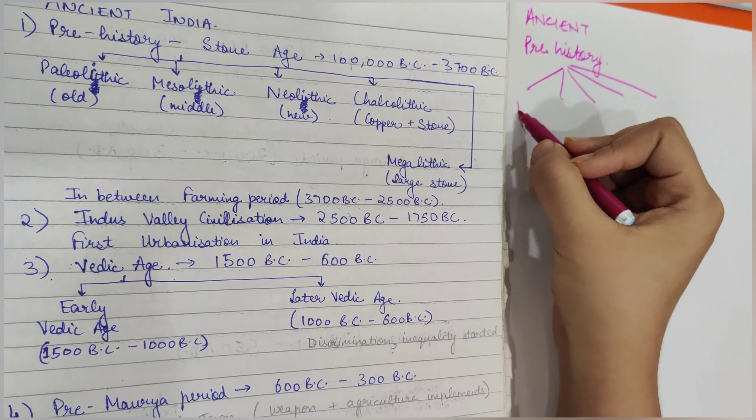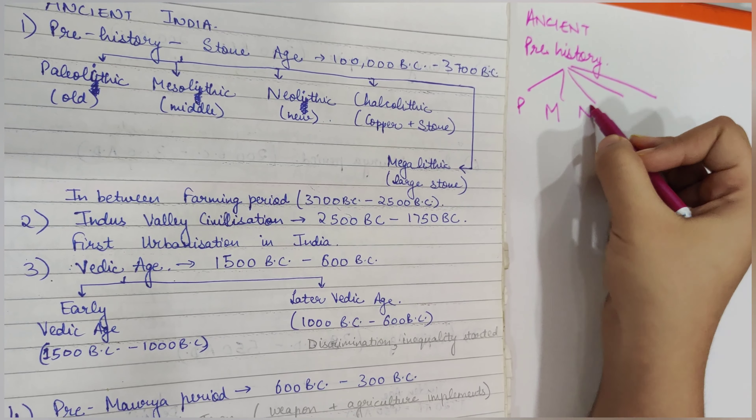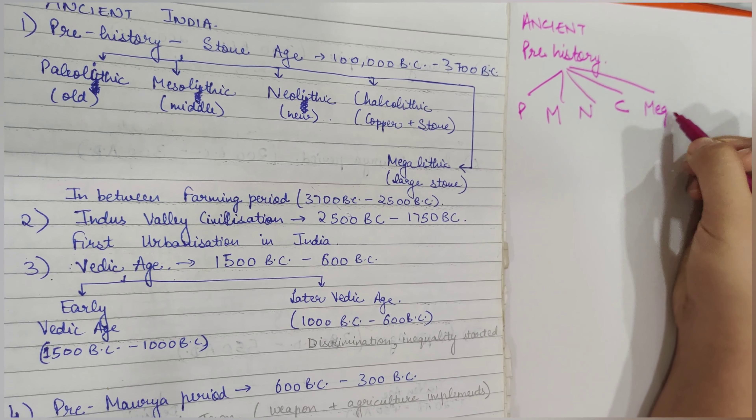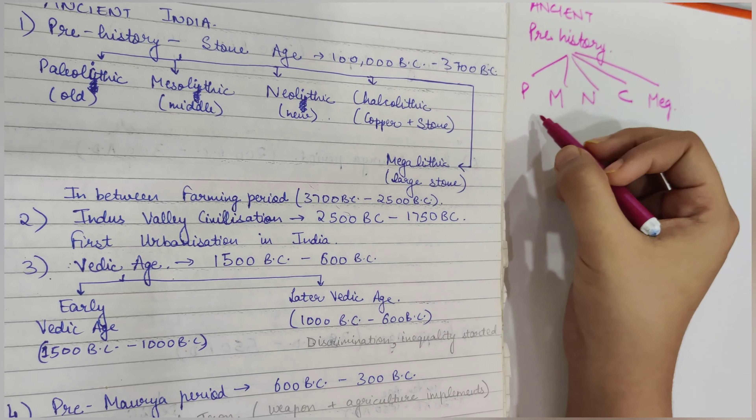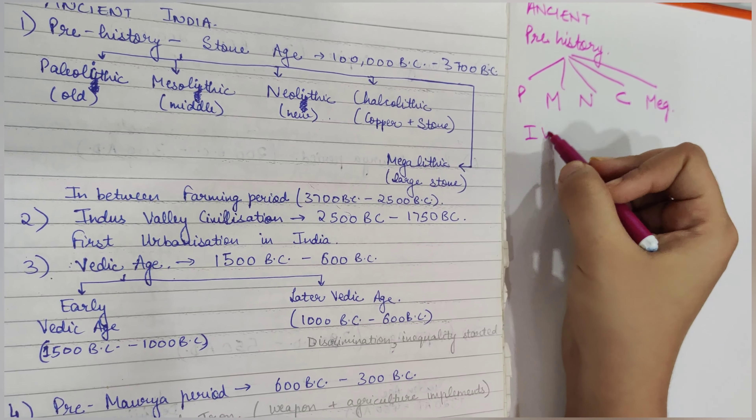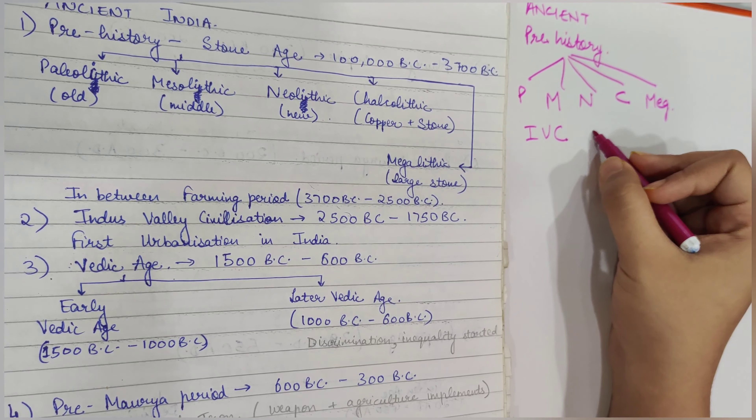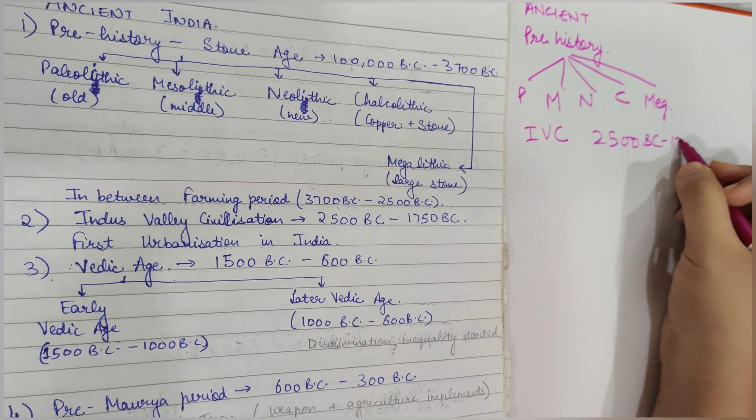These categories are Paleolithic, Mesolithic, Neolithic, Chalcolithic, and Megalithic. After prehistory comes the Indus Valley Civilization. The period of Indus Valley Civilization is 2500 BC to 1750 BC.